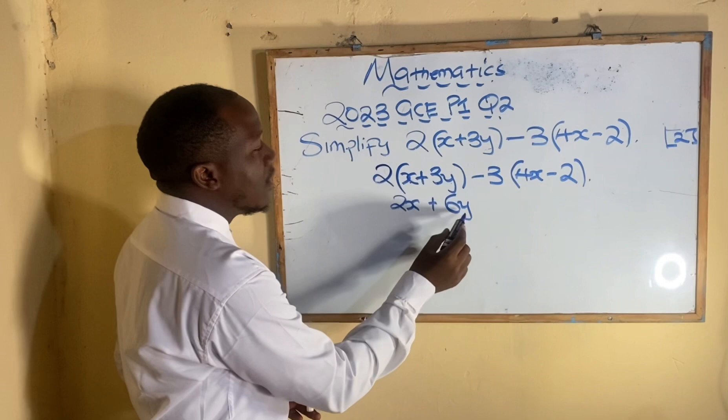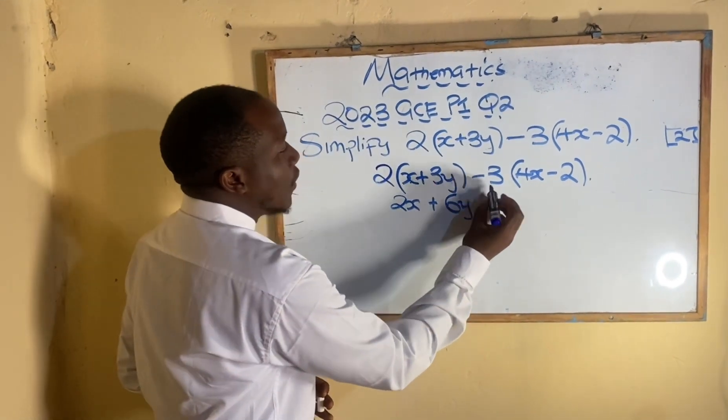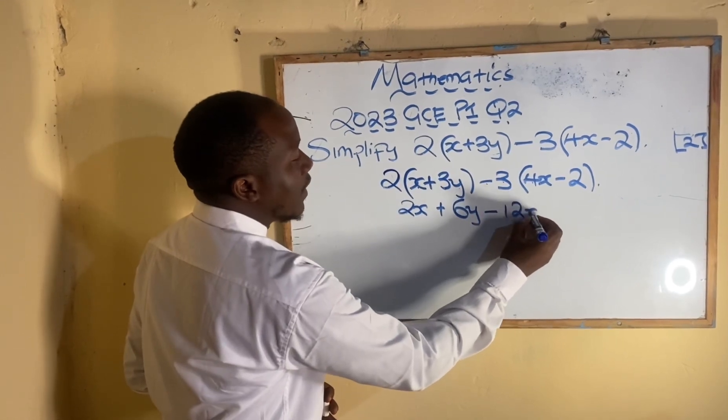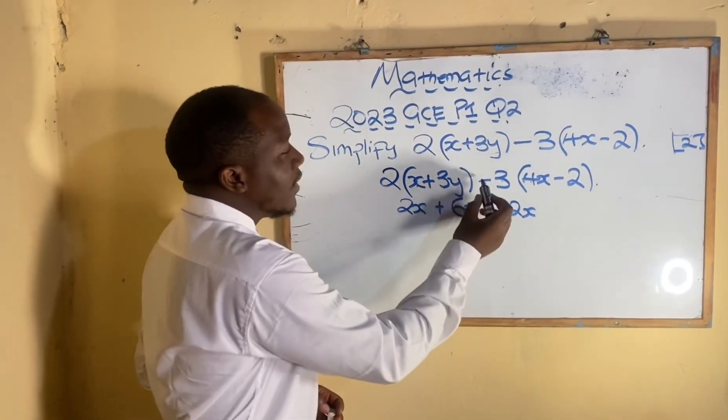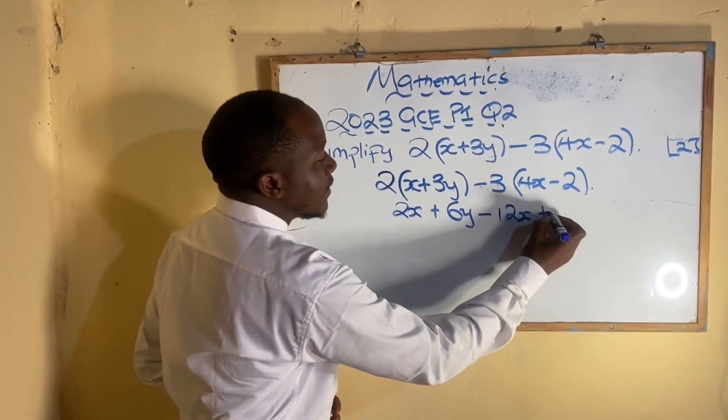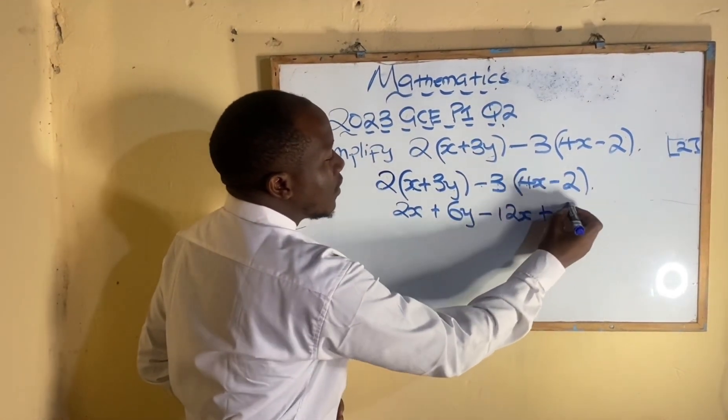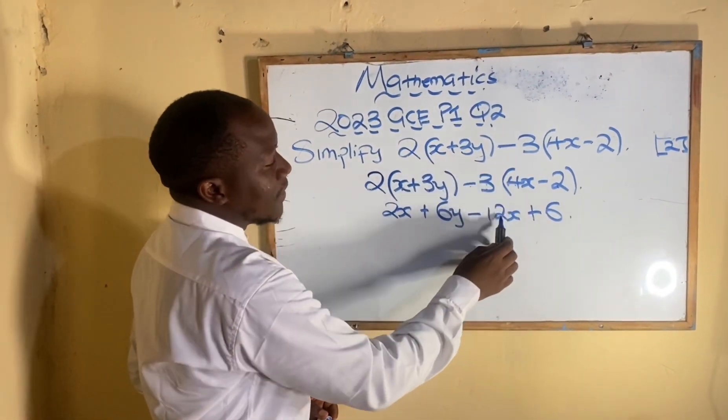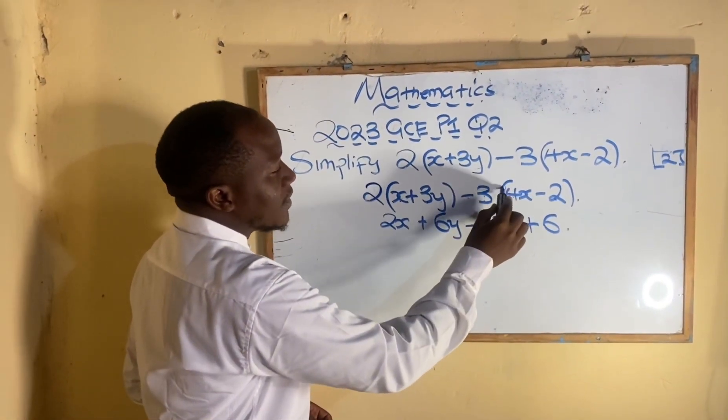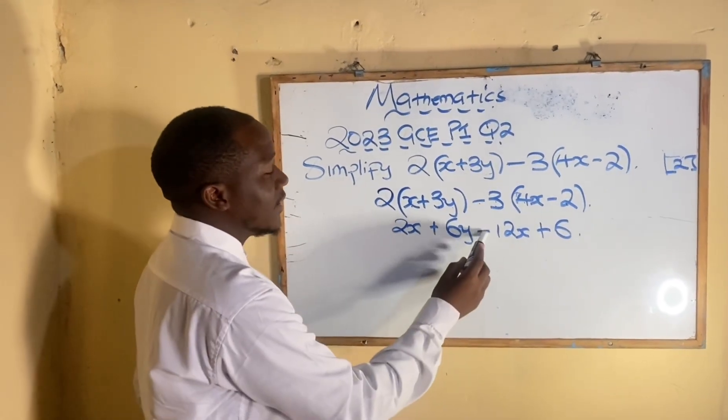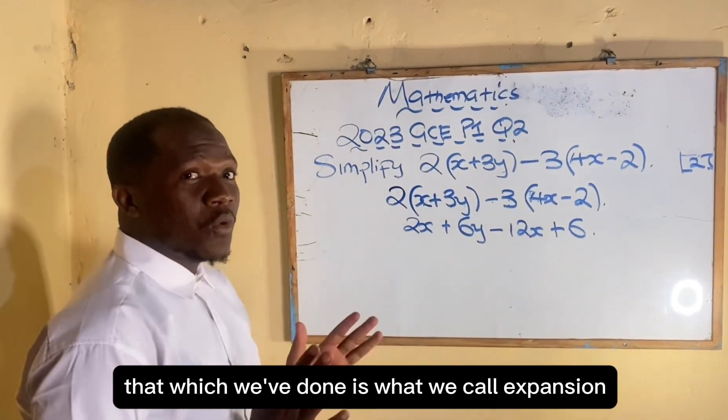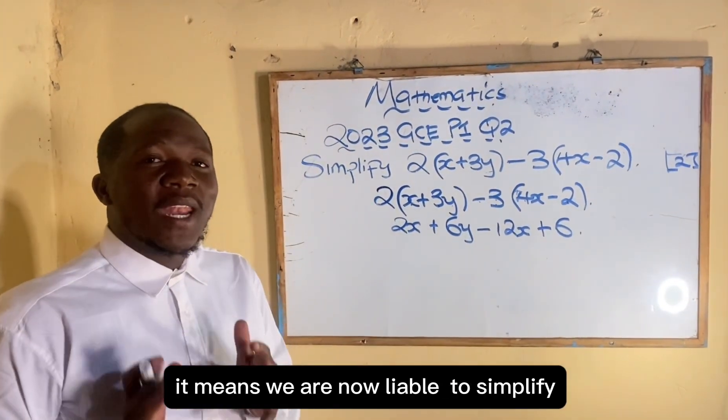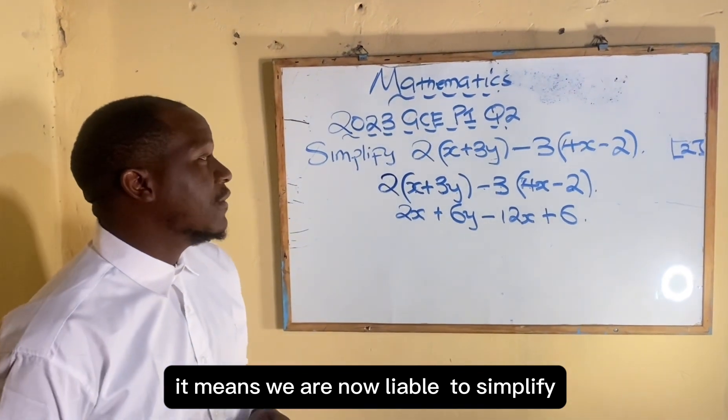Minus or we say negative 3 times 4, this is going to give us negative 12 together with x. And then this negative multiplied by a negative is going to give us a positive. 3 times 2 is going to give us 6. So 3 times 4 is 12, negative times this positive is going to give us a negative. That which we've done is what we call expansion.